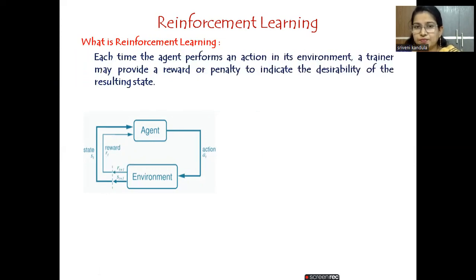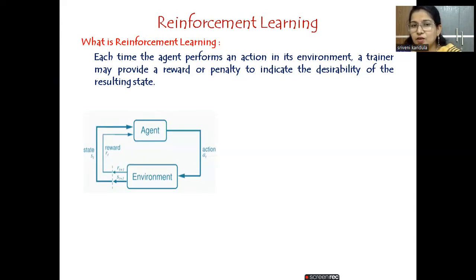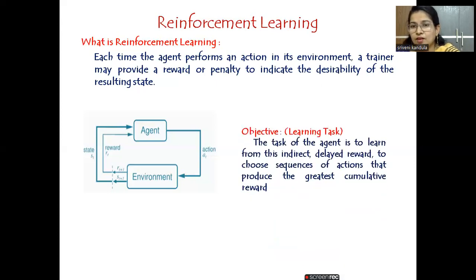Each time the agent performs an action in its environment, a trainer may provide a reward. Here r is a reward, and sometimes the agent might get a penalty — if the reward is positive we consider it a reward, if it is negative we consider it a penalty. This indicates the desirability of the resulting state: whether the agent should pursue that state, use it for further goals, or discard it. The learning task is for the agent to learn from this indirect, delayed reward.